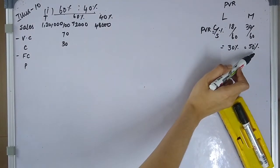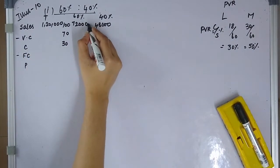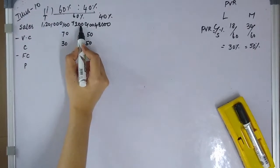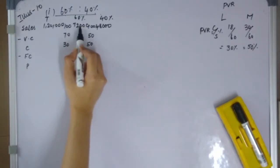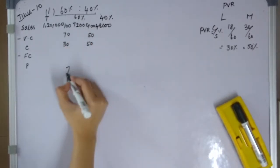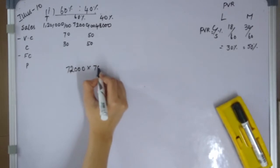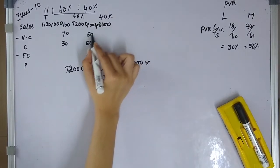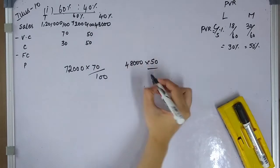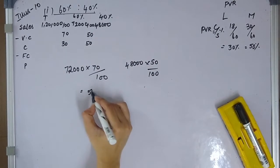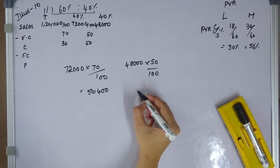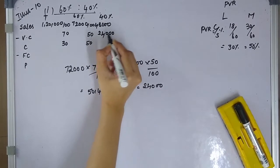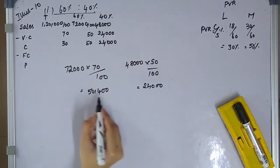For Product L: sales 72,000 at 70% variable cost. Cross multiply: 72,000 into 70 divided by 100 gives variable cost of 50,400, and contribution of 24,000. For Product M: sales 48,000 at 50% variable cost gives contribution of 24,000.